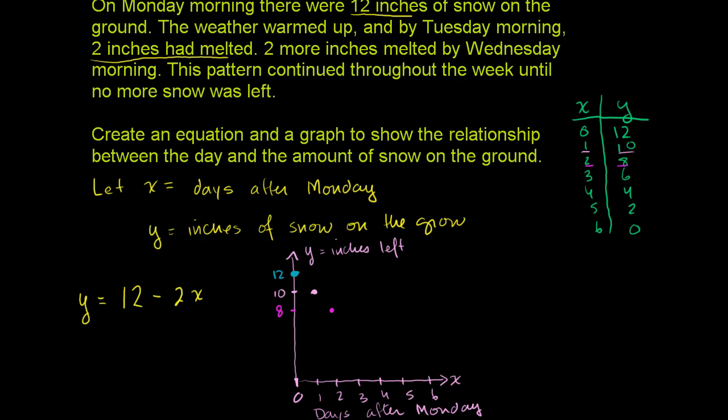And then 3 days after Monday, we have 6 inches on the ground. You can see that a line is forming here. Then 4 days after Monday, we have 4 inches on the ground. And then 5 days after Monday, we have 2 inches on the ground.